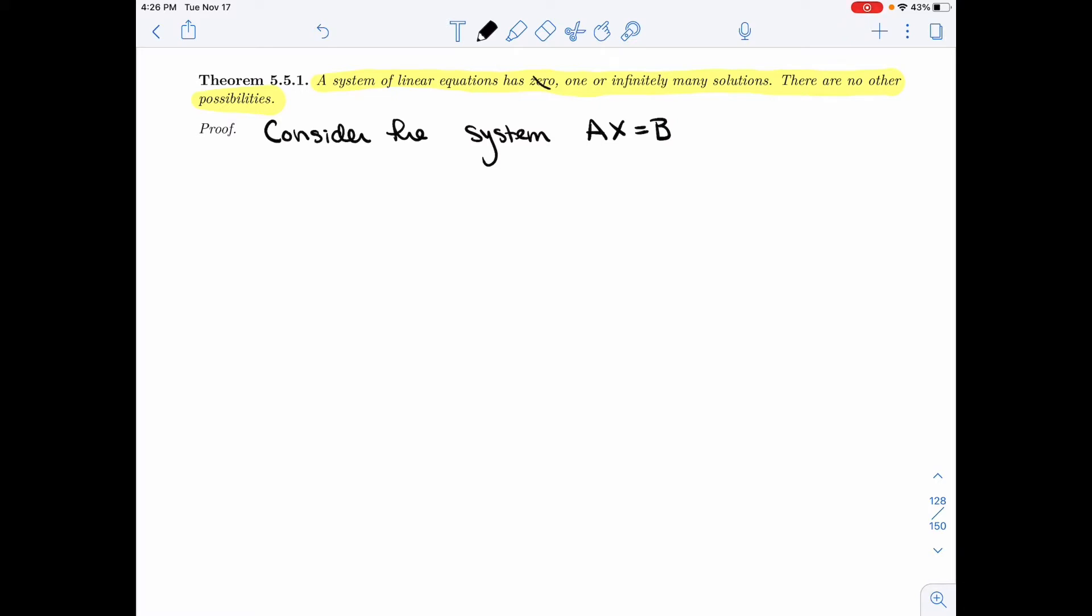Let's assume that we don't have 0 and we don't have 1 solution. So we know we have at least 2 solutions, and I'm going to prove that as soon as you have 2, you have infinitely many. So assume that the system has 2 different solutions.